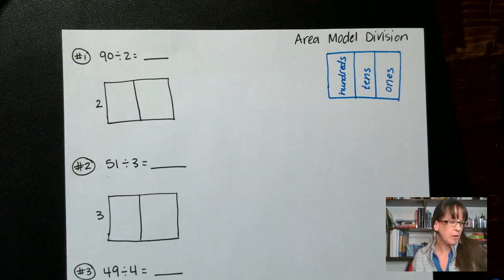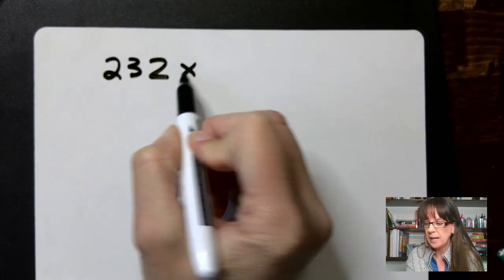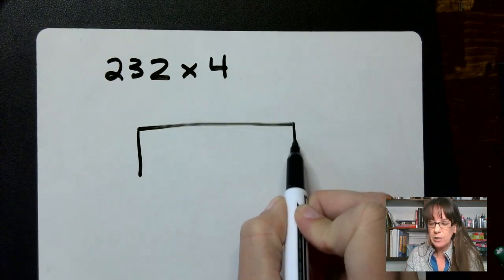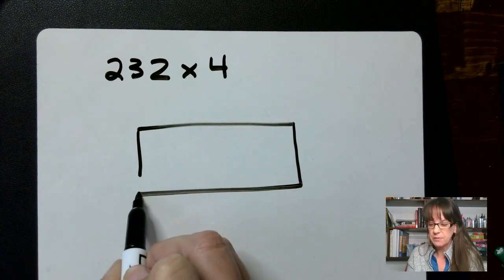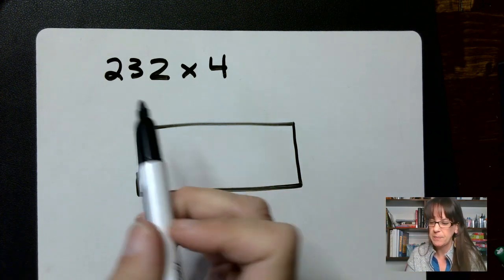Before we actually get started, I want to show you multiplication by the box method. Multiplication by the box method is a really helpful way to multiply multi-digit numbers. You may already know how to do this, but this will help with understanding the division part.